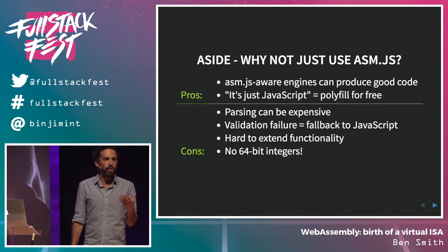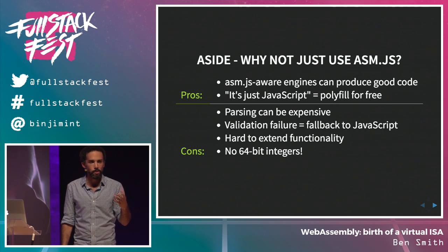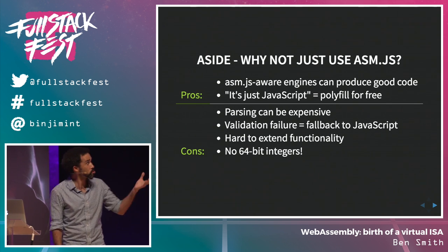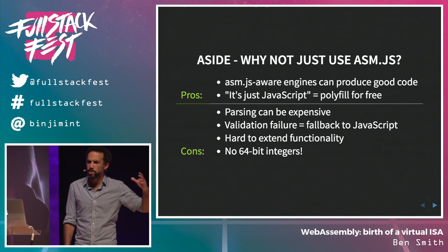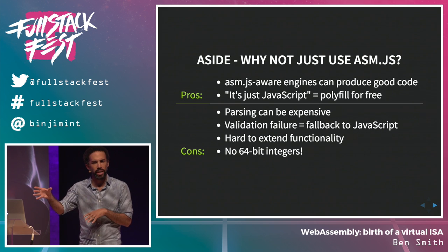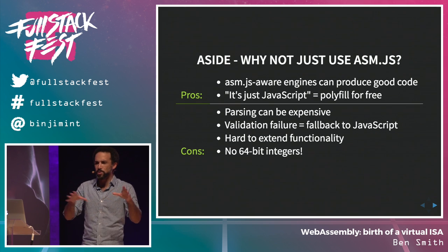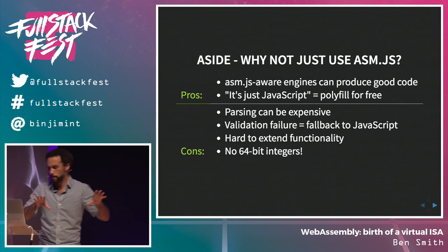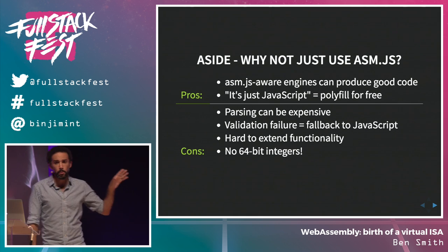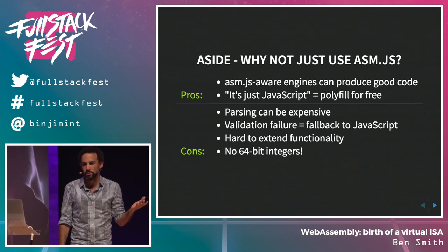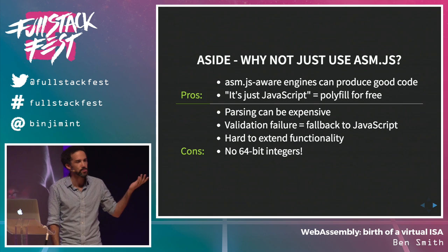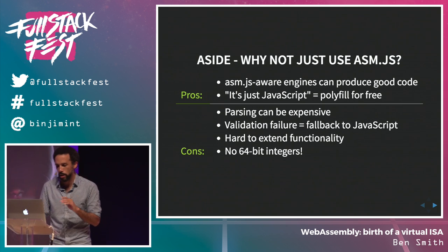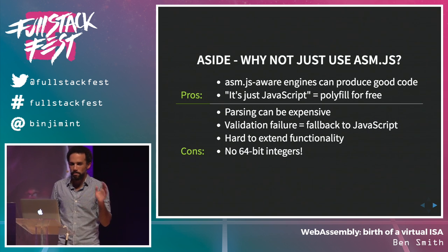For example, if you want to add shared memory, you'd have to add it to JavaScript to support it in ASM.JS, even though ostensibly they should be separate things. And the last big issue for me: there are no 64-bit integers. We're all running 64-bit phones and we can't do 64-bit integers. So maybe we can do better.